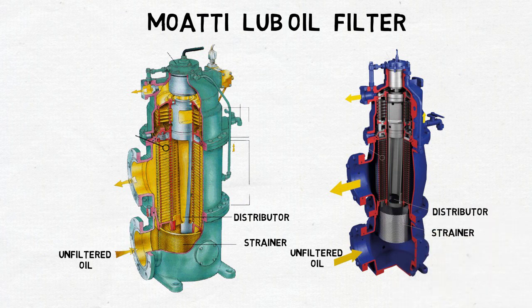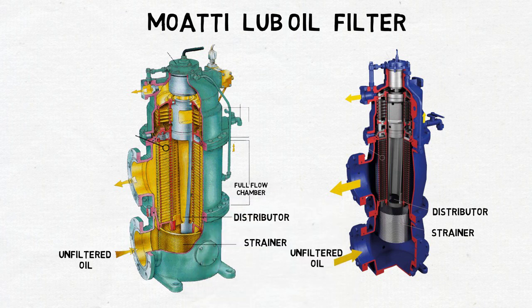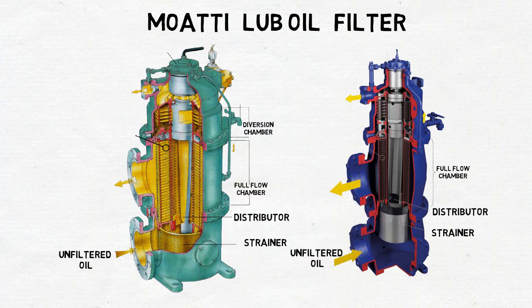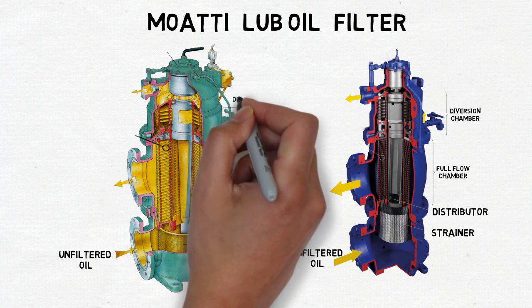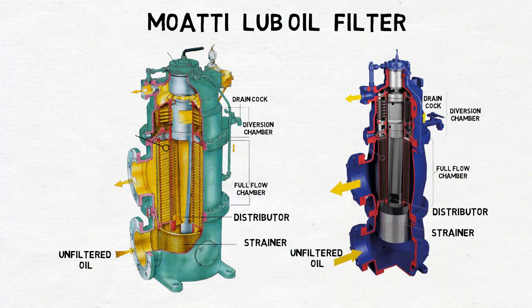Moatti filter have two chambers, namely full flow chamber and the other one which is known as diversion chamber. This is the drain cock to drain out the sediments or sludge.